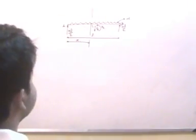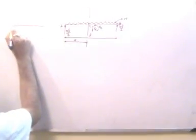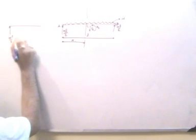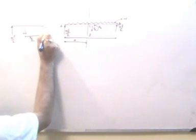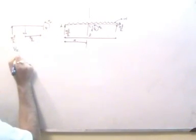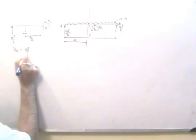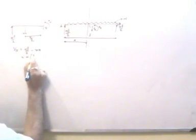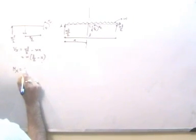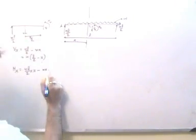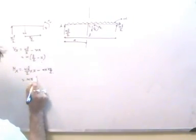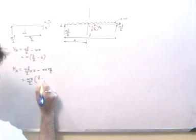Isolating body AC as a free body diagram: the reaction is WL/2, the distributed load resultant is WX acting at X/2 from C, giving VX and MX. Therefore, VX equals WL/2 minus WX, and the bending moment MX equals WL/2 times X minus WX times X/2, which simplifies to WX/2 times (L/2 minus X).